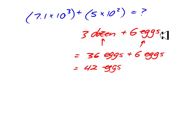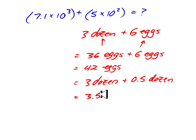Or conversely, I could turn these eggs here into dozens. So, I could also say three dozen plus half a dozen. Now that I have the same units, dozens, I could say I have 3.5 dozen eggs.